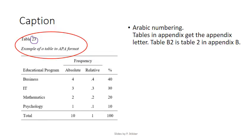The only exception are the tables in an appendix — they get a letter in front of the numbering. So for example, Table B2 would be the second table in Appendix B. Another thing to notice is that the title goes underneath the number and in italic — so still on top of the table, but below the numbering. We first have the table number, and then the title in italic straight below that.